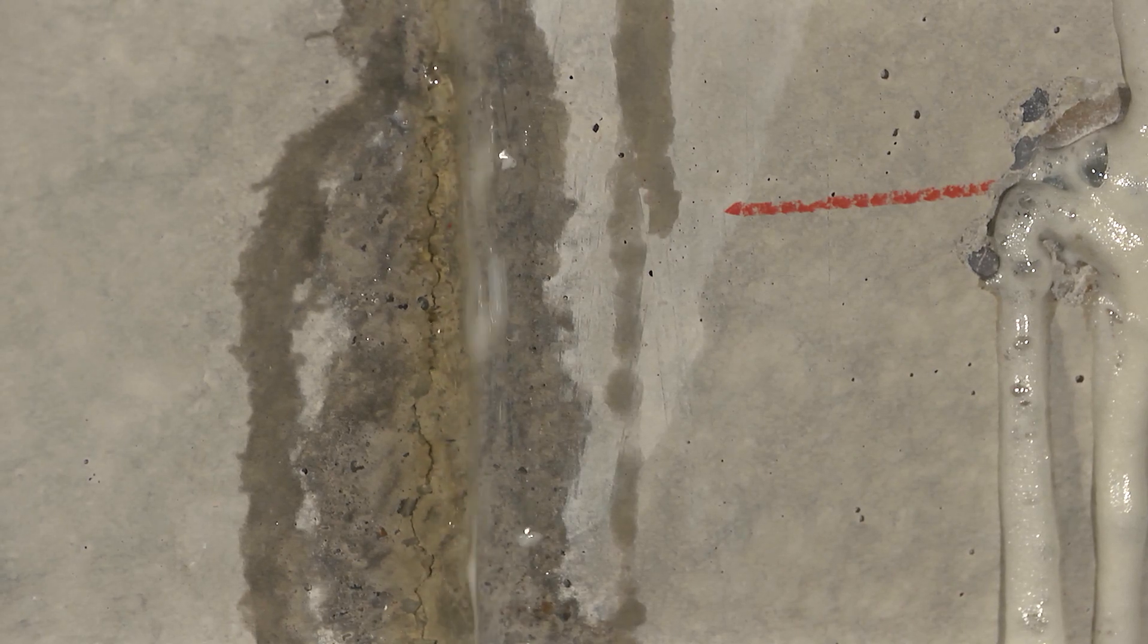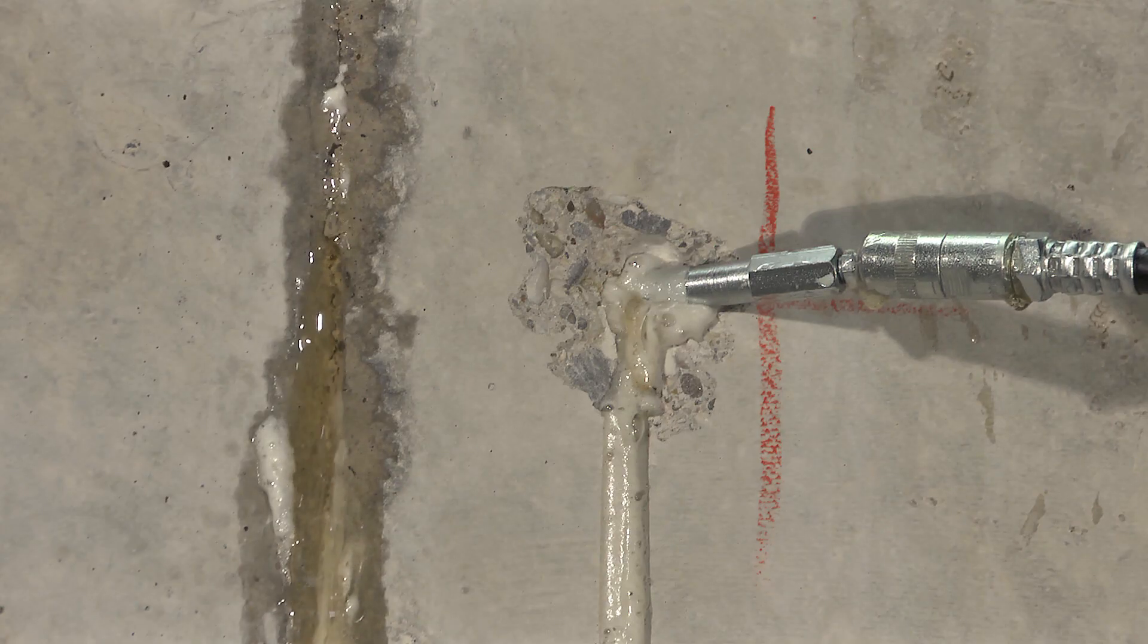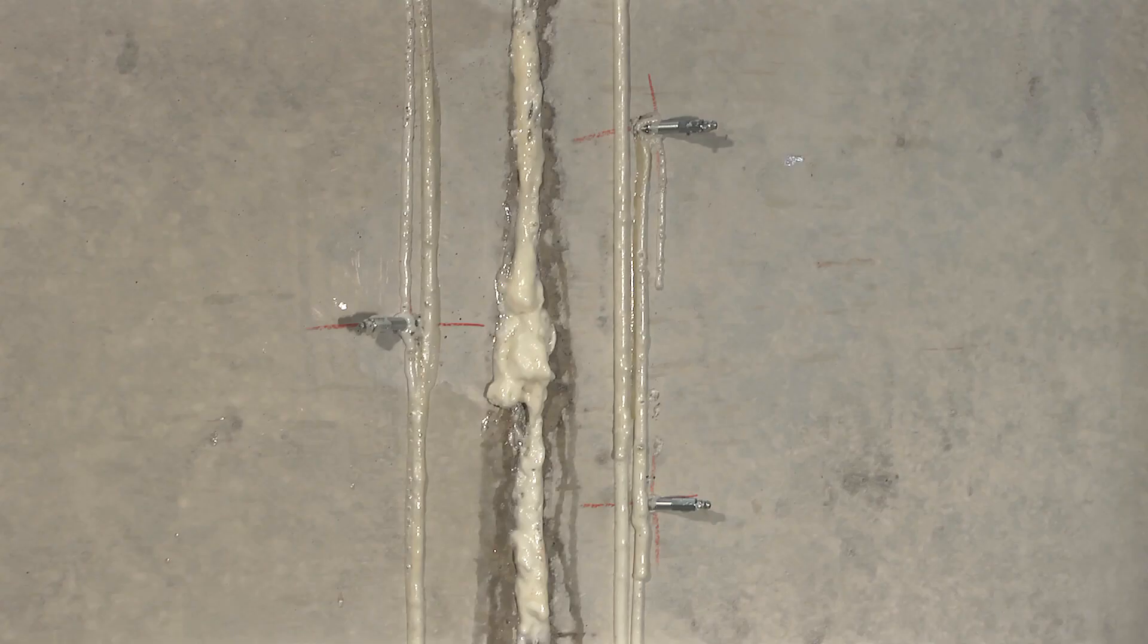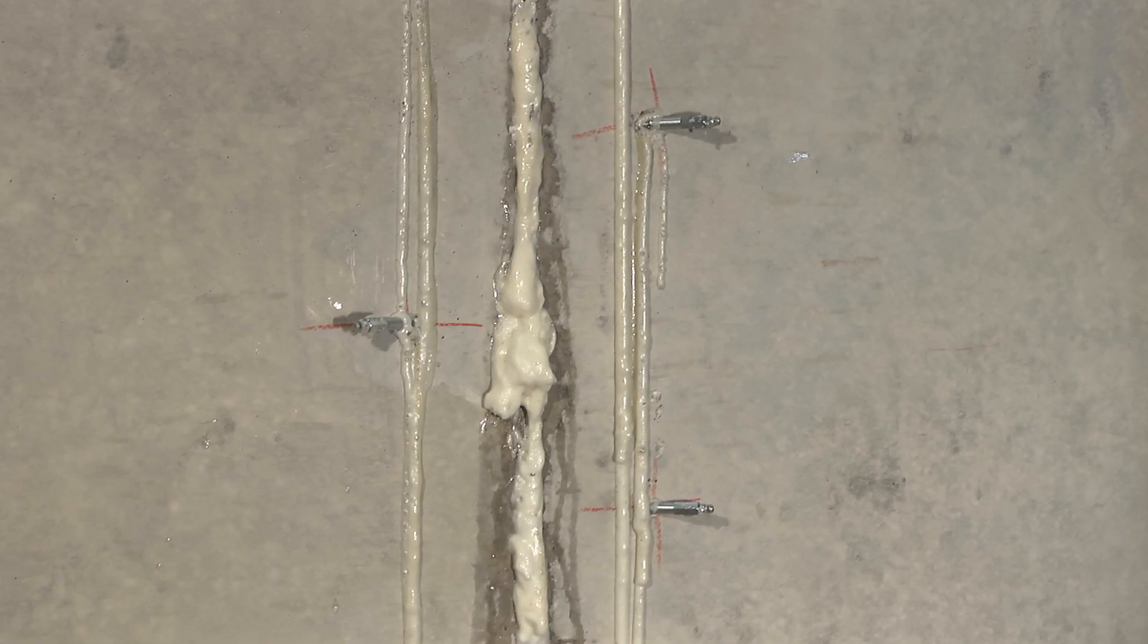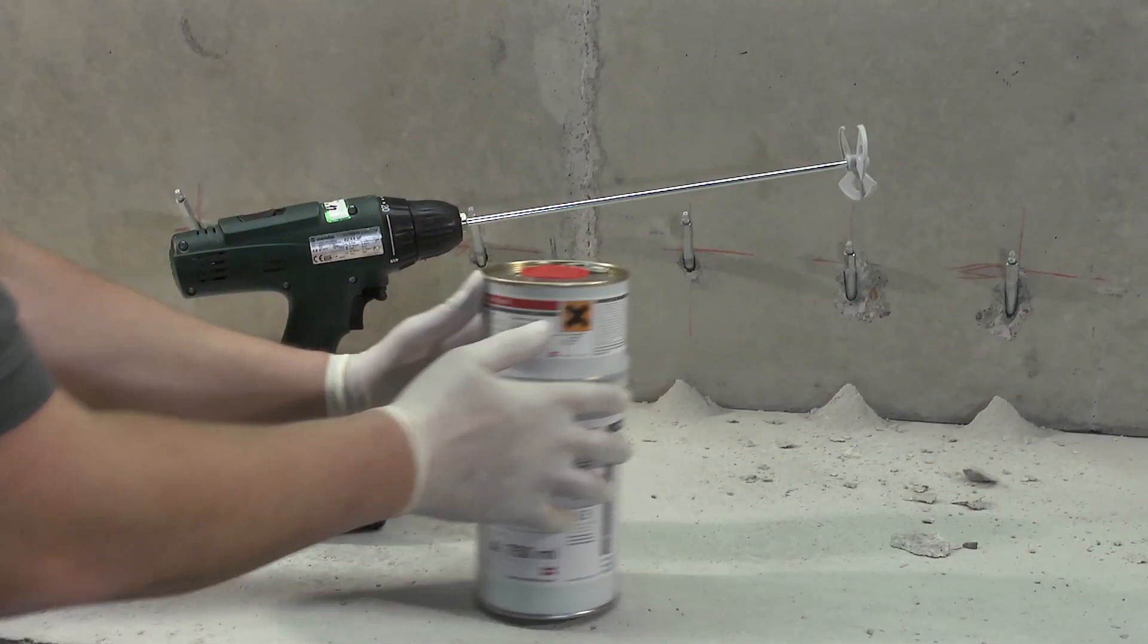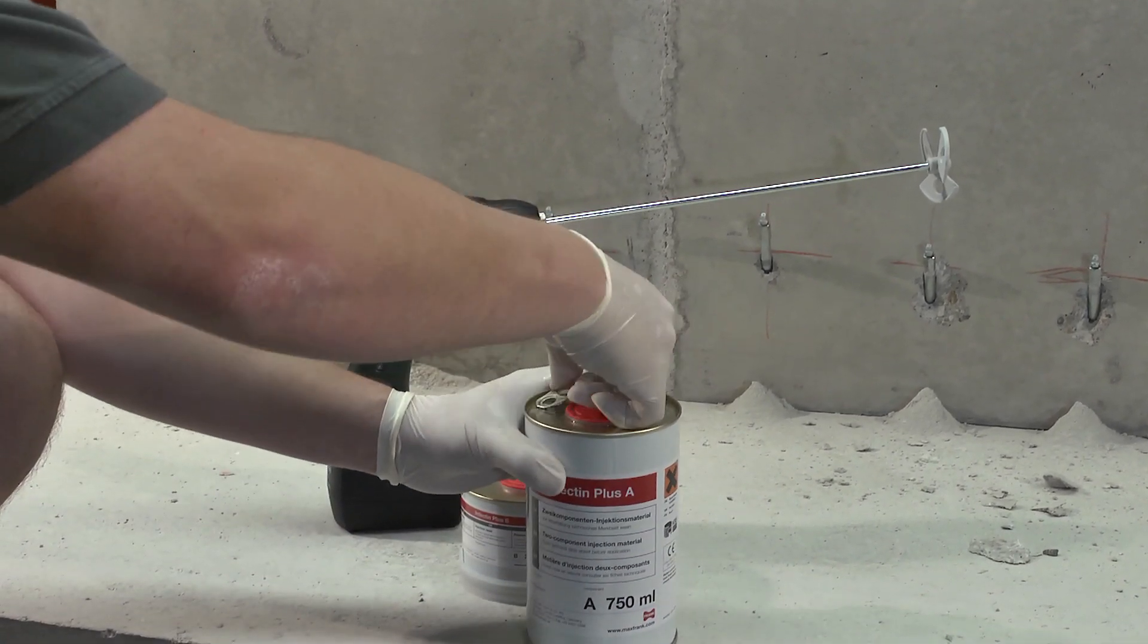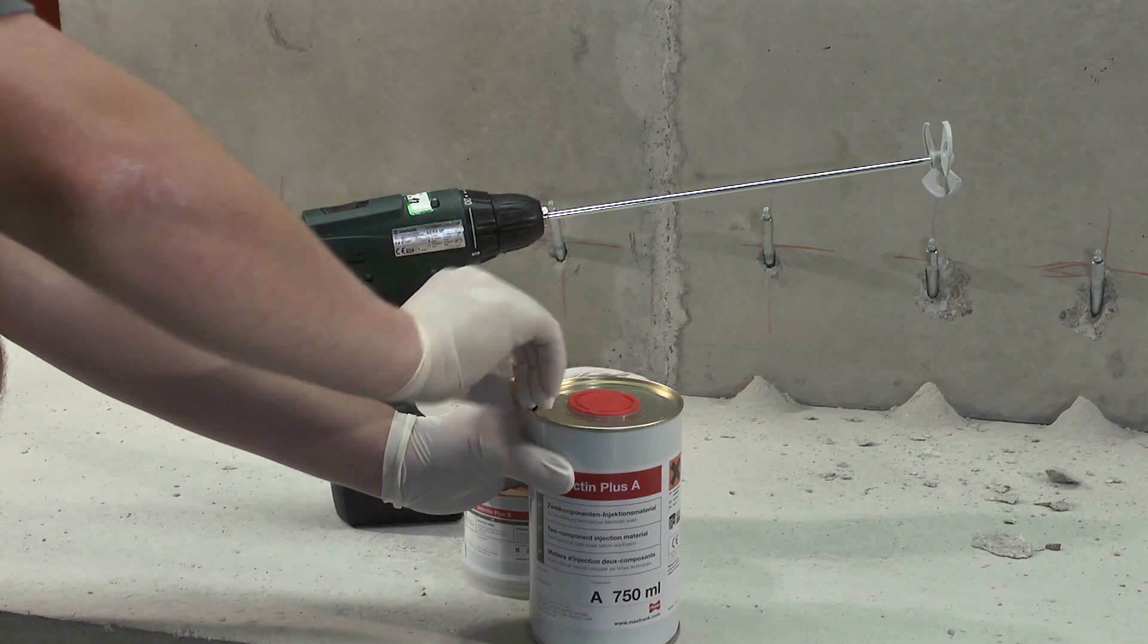Afterwards, clean the injection equipment and tools prior to final grouting. When using Intectin Blitz, it is important to note that subsequent injection of Intectin Plus commences prior to curing of the Blitz resin. Otherwise, the packers cannot be filled with Intectin Plus and new packers need to be placed.